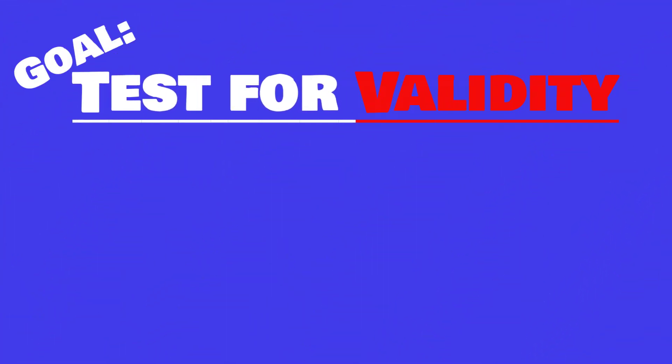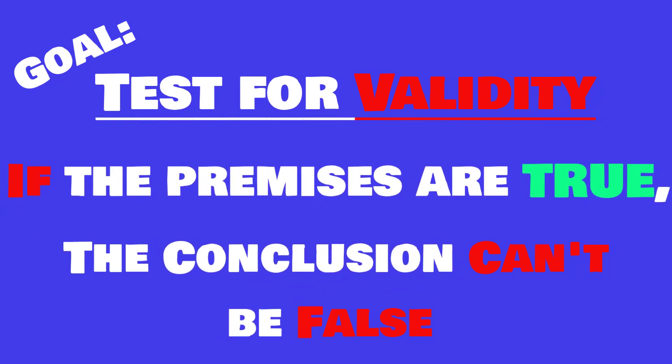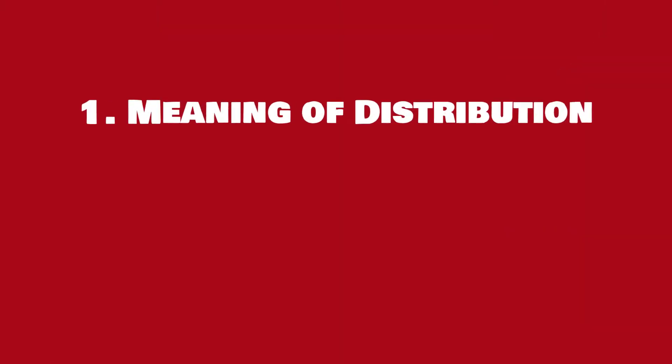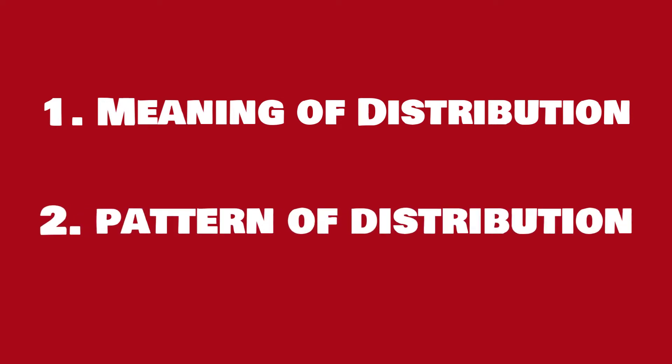Our goal is to analyze a categorical syllogism to see if it's valid — structured such that if the premises are true, the conclusion couldn't possibly be false. But before we can do this, we need to understand another concept: distribution. Although some people find this tricky, it's actually pretty simple if you memorize two things: what we mean by distribution, and the pattern of distribution among the four proposition types.